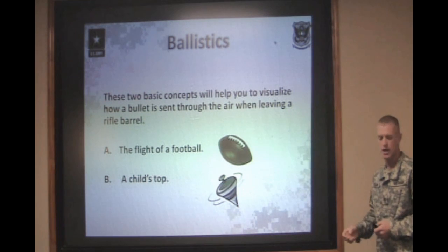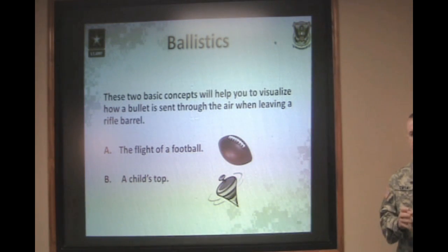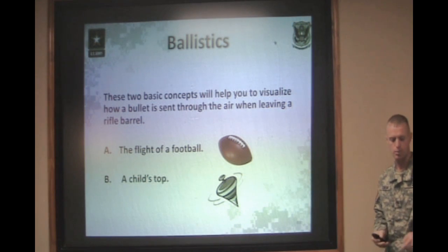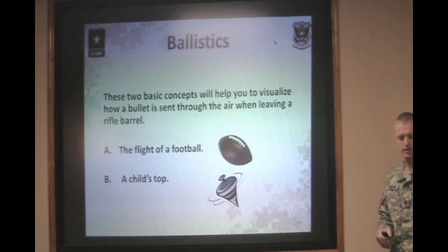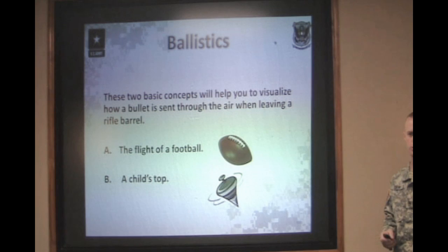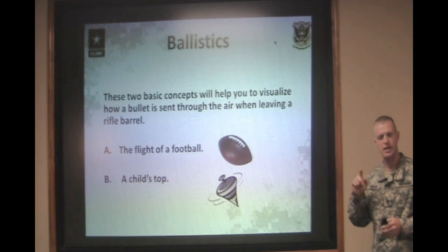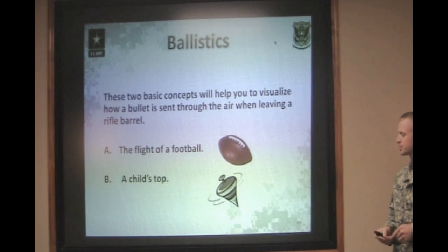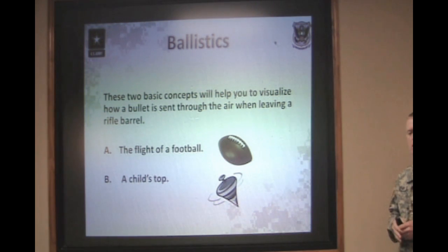And then you have a child's top. If you set a top on a table and spin it very quickly, it stays stable for a very long time. If you bump that top while it's spinning at a high rate of speed, it rights itself and stays pretty stable. Once that top starts to slow its rotations down, it becomes very unstable and eventually will just fall over. A bullet does the exact same thing. We spin that bullet at a high rate of speed, keeping it pointed nose-forward going downrange, until it slows down enough to where it becomes erratic.